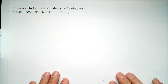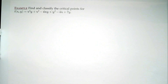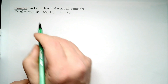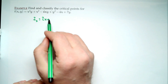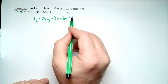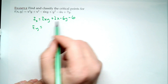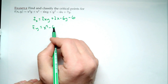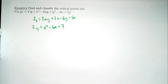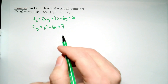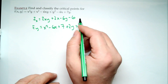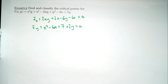Find and classify the critical points for f(x,y) = x²y + x² - 6xy + y² - 6x + 7y. We start as always by setting the gradient to zero. f_x = 2xy + 2x - 6y - 6 = 0, and f_y = x² - 6x + 2y + 7 = 0.